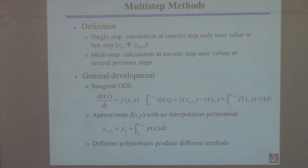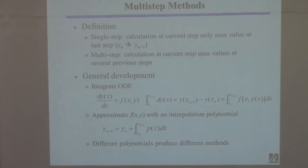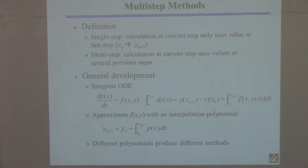You can separate this equation — separate and integrate. What I'm doing here is separating the equation, putting dy on one side and f(x)dx on the other, then integrating between x_n and x_{n+1}, where those two values are separated by a distance h. The left-hand side integrates straightforwardly — the integral of dy is just y.